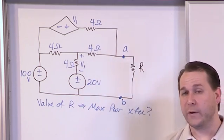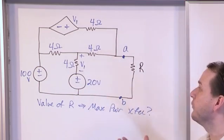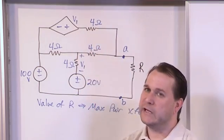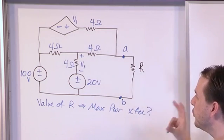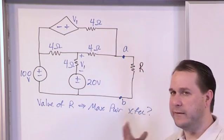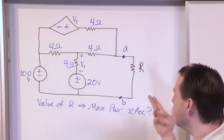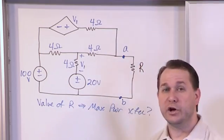Well, remember, there's several ways to do it. In this circuit, we have a dependent source, so it kind of limits your options a little bit. There's really still a couple of ways to do it. You could find the open circuit voltage, the Thevenin voltage, and then you could find the short circuit current going through.